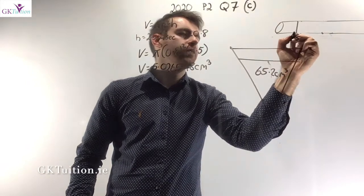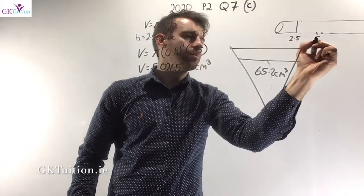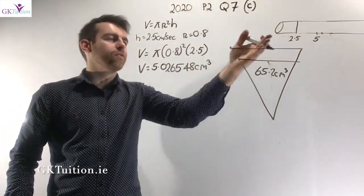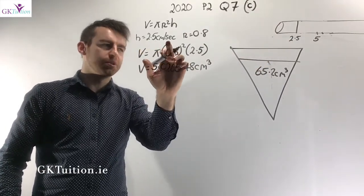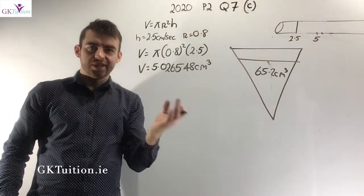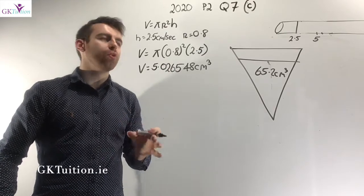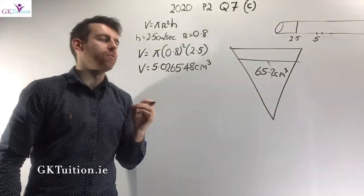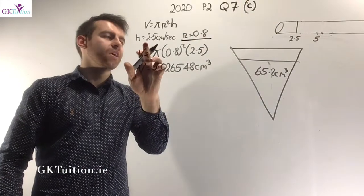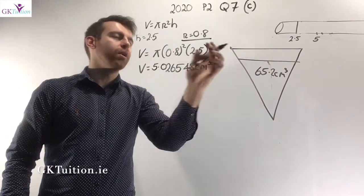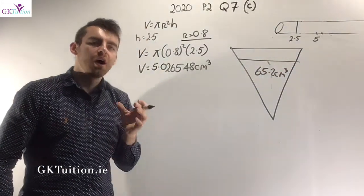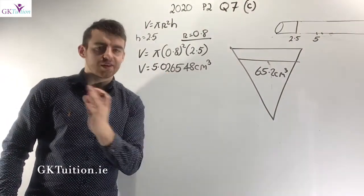So 2.5 cm of the cylinder's length flows out per second. To find how much water flows out each second, I work out the volume of a cylinder with radius 0.8 and height 2.5. This gives the volume of water flowing into the cone each second.